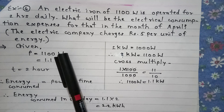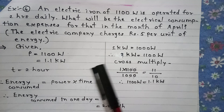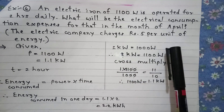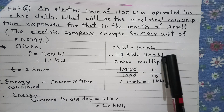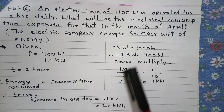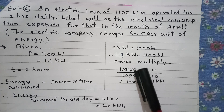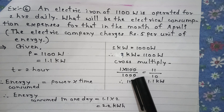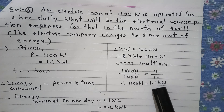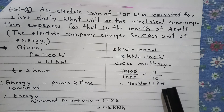Given: P is equal to 1100 Watt. We are converting this Watt into Kilowatt. Since 1 Kilowatt is equal to 1000 Watt, 1100 Watt equals how many Kilowatt? Cross multiplying: 1 into 1100 upon 1000. The zeros cancel, giving 11 upon 10, which is equal to 1.1 Kilowatt. Therefore, 1100 Watt is equal to 1.1 Kilowatt.